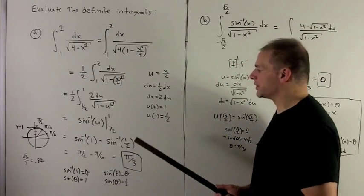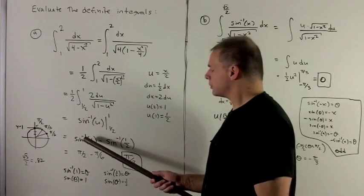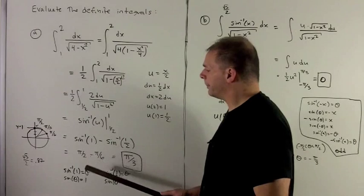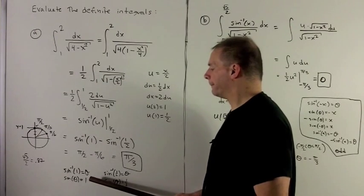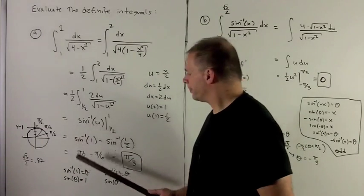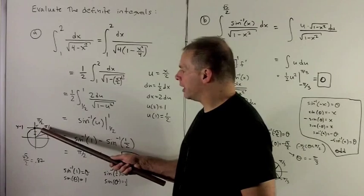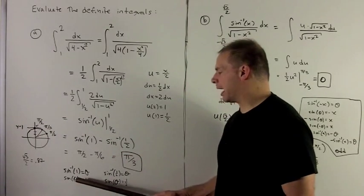We evaluate and take the difference, and now I have to figure out what these numbers actually are. If I call sine inverse of 1 theta, that's the same as saying sine of theta equals 1. Remember, sine is the y value in the unit circle, so the y value of 1 gives me the angle pi over 2. So theta is going to be pi over 2 here.